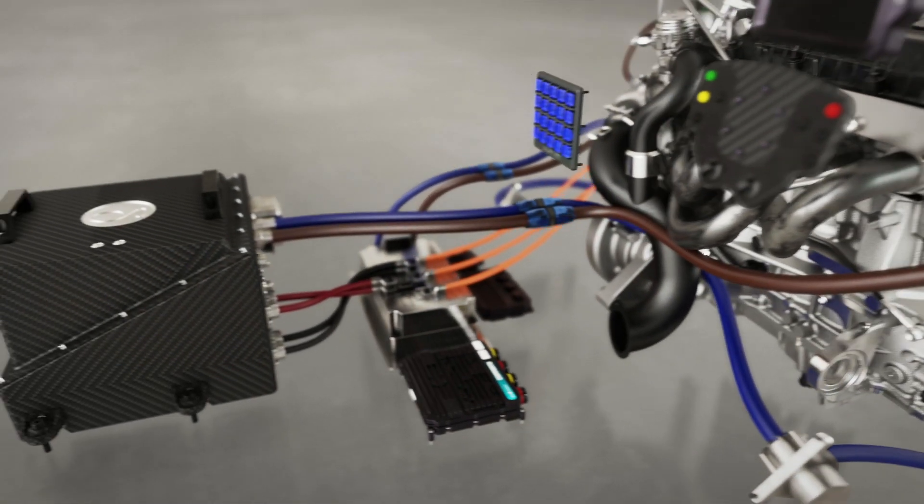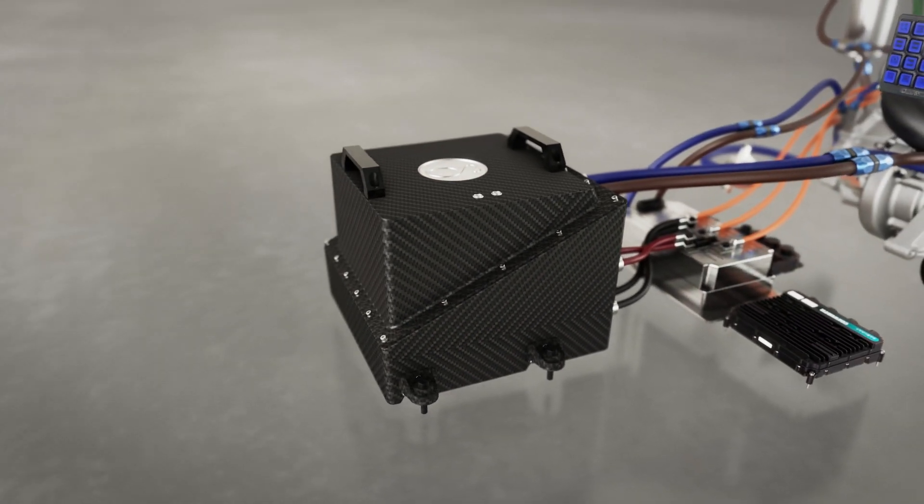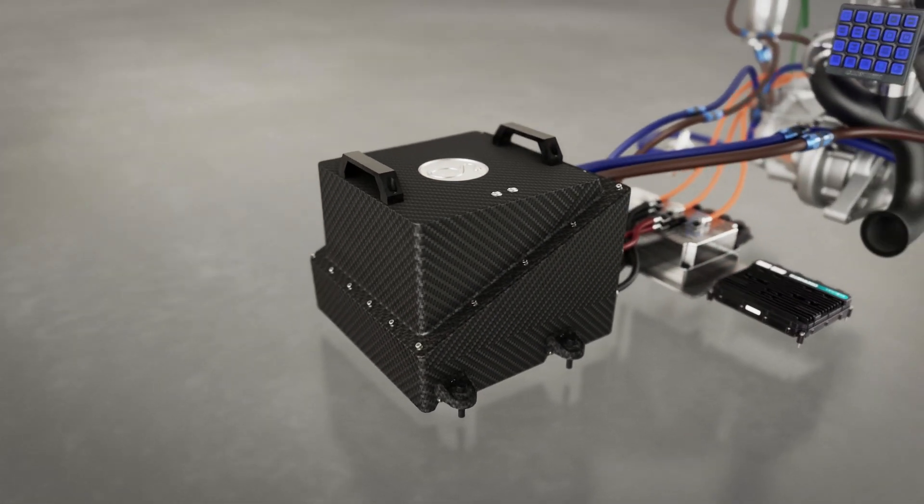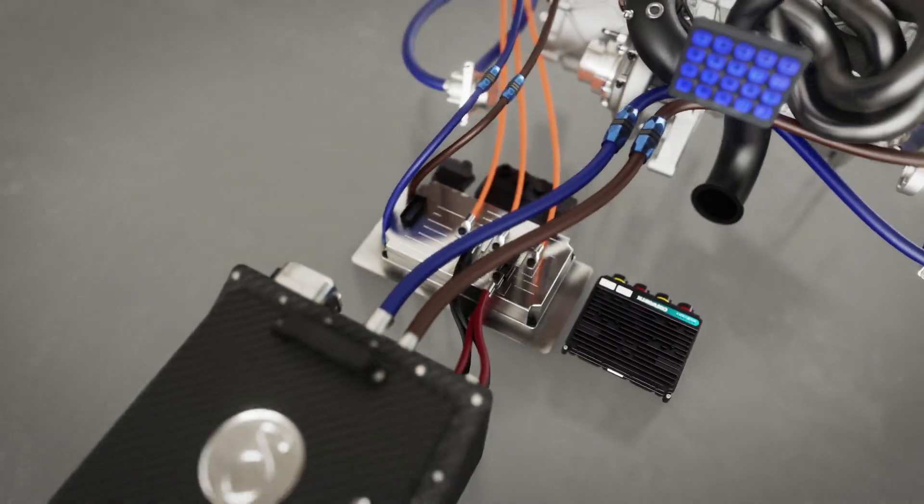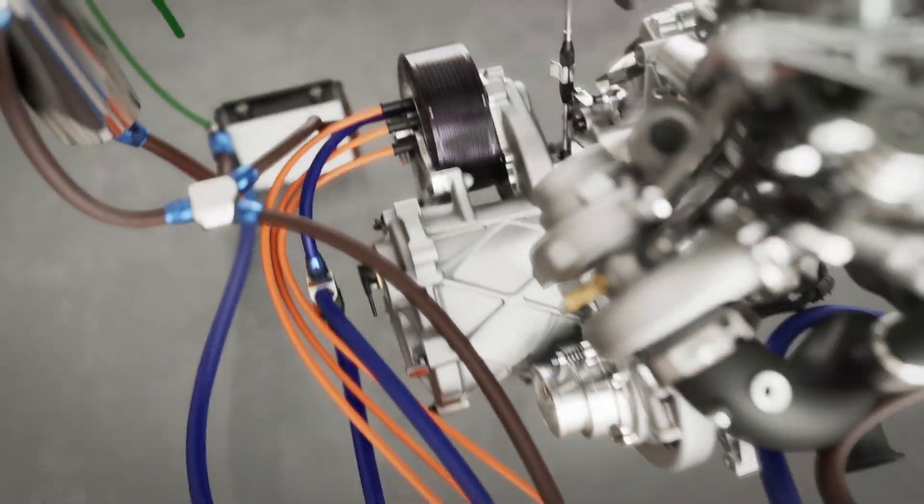The Cosworth hybrid element is comprised of a 48-volt battery located on the floor of the car in place of the ballast box, a motor controller or inverter, the motor generator unit also known as an MGU, and two cooling systems.